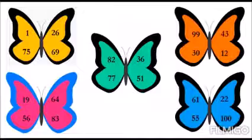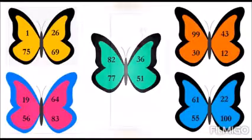Orange butterfly: ninety-nine, thirty, forty-three, twelve. Pink butterfly: nineteen, fifty-six, sixty-four, eighty-three. Last blue butterfly: sixty-one, fifty-five, twenty-two, one hundred. Now let's read the numbers in chain.